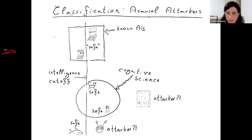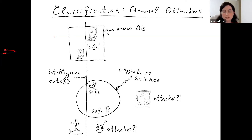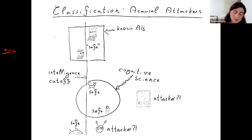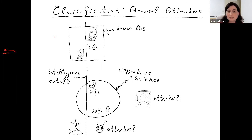Now the other part: how to defend from acausal attacks. The key insight is that an acausal attacker is also going to show up as a precursor. If the AI is entertaining a malign simulation hypothesis, then in that hypothesis, the acausal attacker is a precursor.